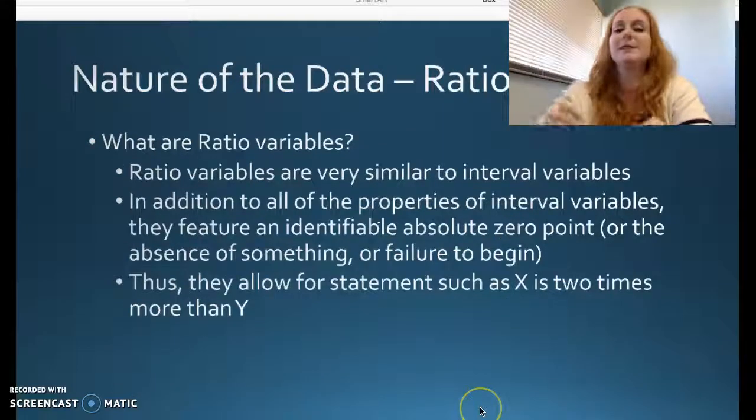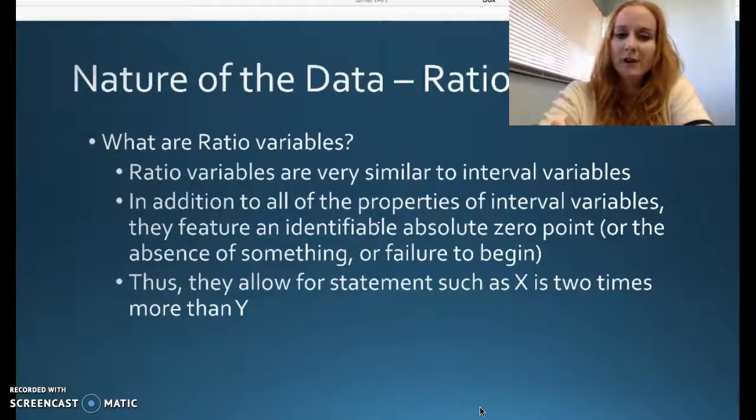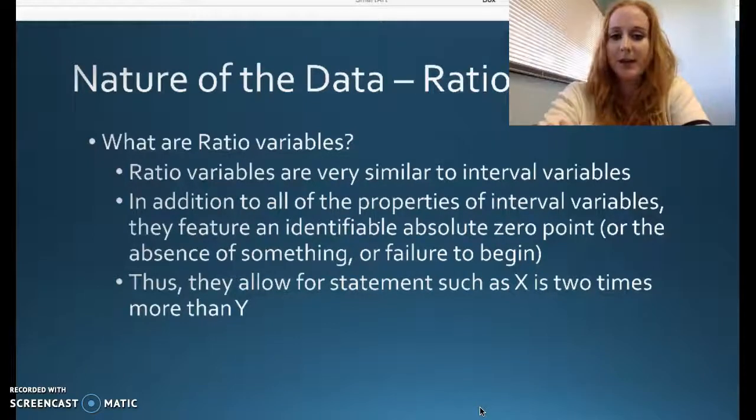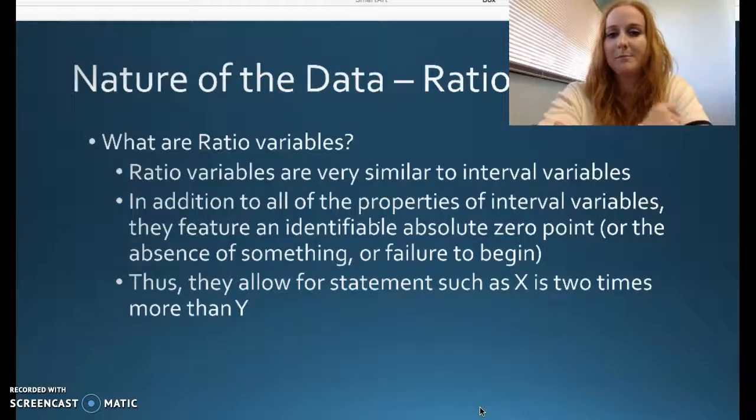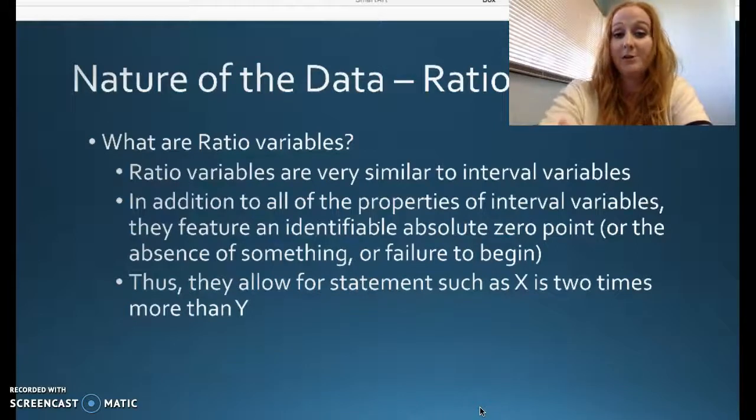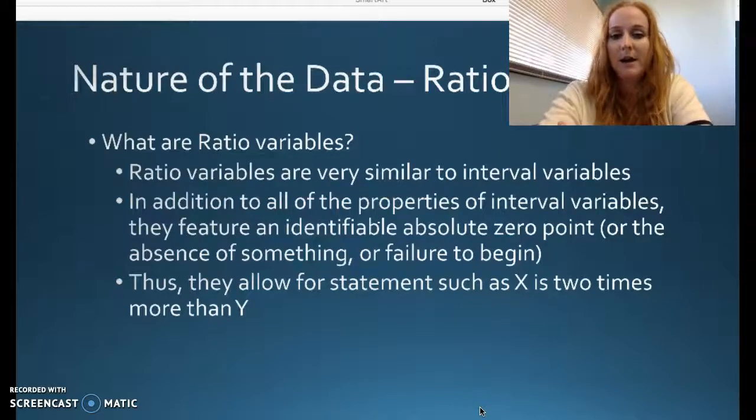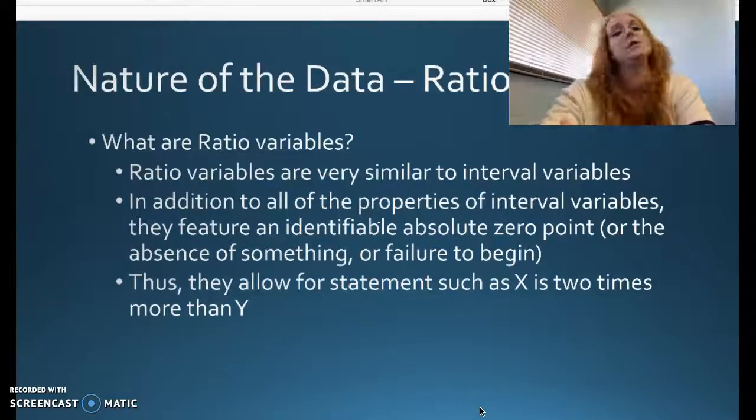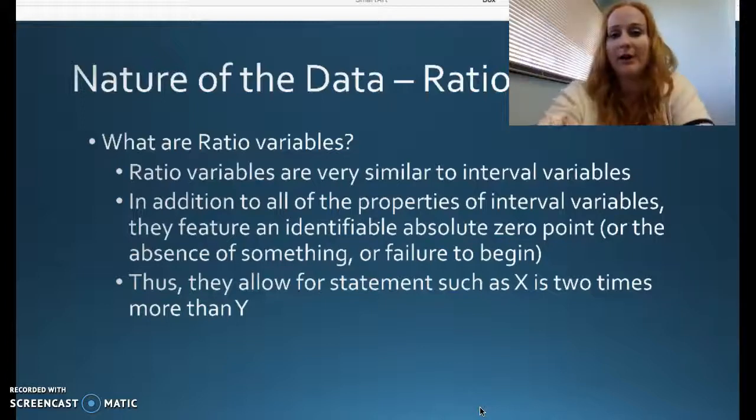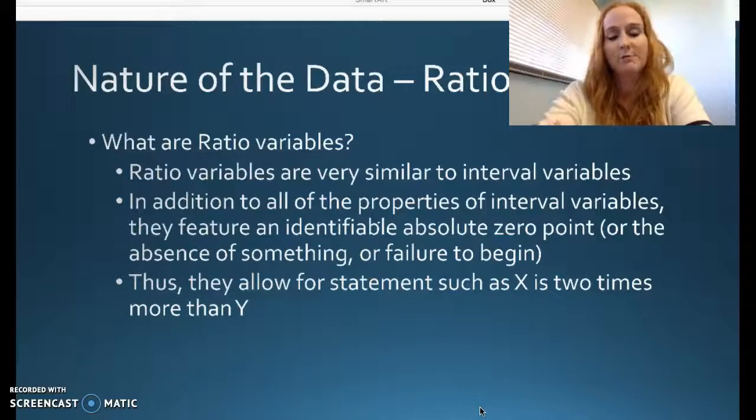Ratio variables. We don't see a lot of these. Ratio variables, very similar to interval variables. They deal with quantities. They give us numbers. They have all the properties of interval variables. But they also feature an identifiable absolute zero point, or the absence of something, or the failure to begin. You might see a ratio variable called time or distance. In temperature, you could go below zero. You could go negative. You could go positive. All over a range, an interval of numbers. In ratio, you can't. You can't be negative pounds. You can't be negative time. So you have to start at zero, and you can only go up from there.